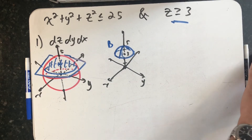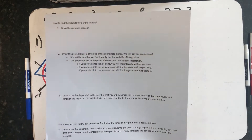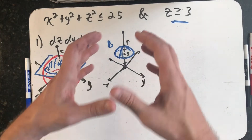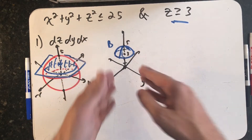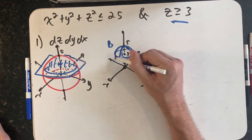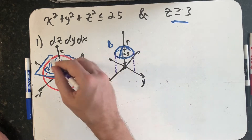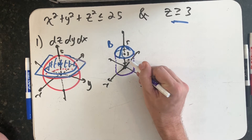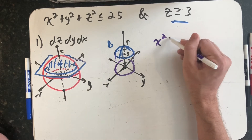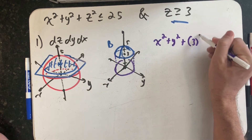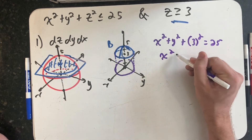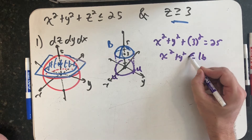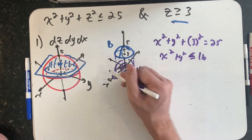We've drawn the region. Now project it into the xy-plane by thinking of the shadow — ignoring z values. Setting z equals 3 and substituting into the sphere equation gives x squared plus y squared plus 9 equals 25, so x squared plus y squared equals 16. That's a circle of radius 4 in the xy-plane. Turning that into an inequality gives us region R — the shadow of B in the xy-plane.